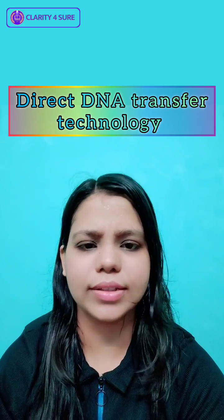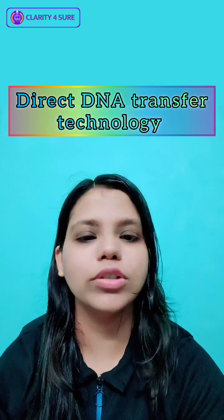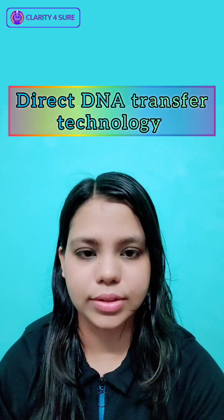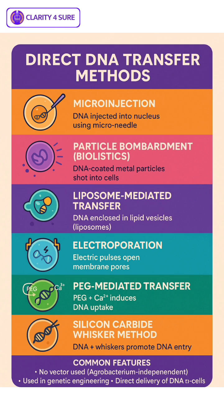Very few students are answering — I want all of you to answer. Let's jump into it and quickly understand the key direct DNA transfer methods used in plant genetic engineering. These techniques are especially useful for monocots which are not easily transformed using Agrobacterium.